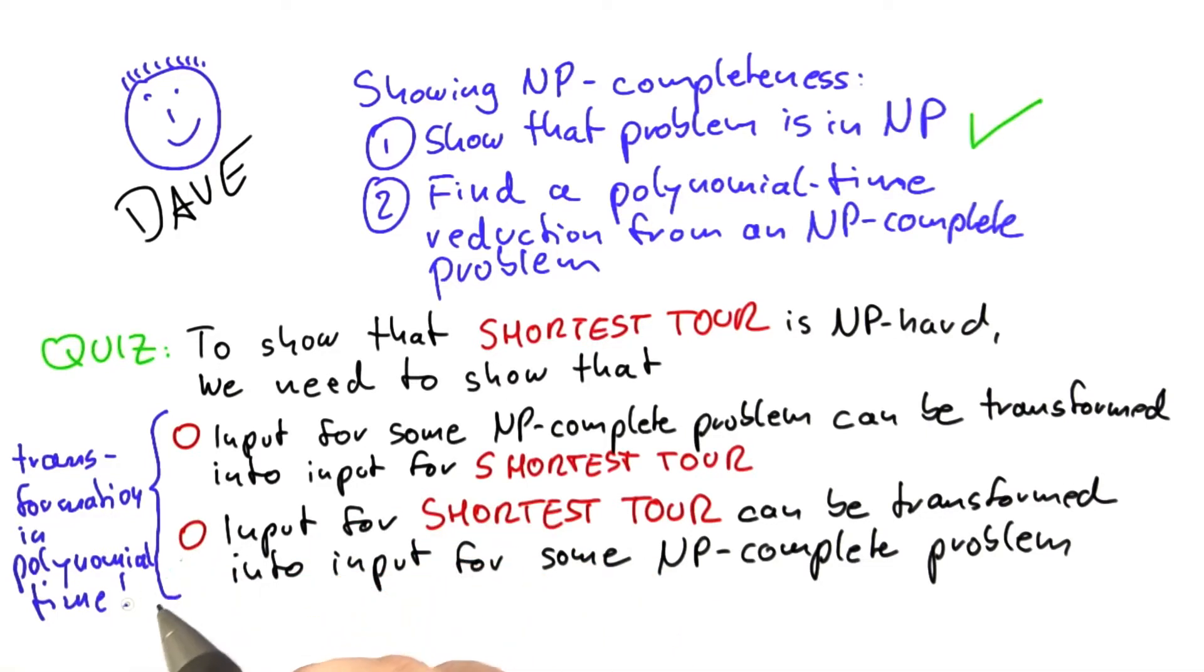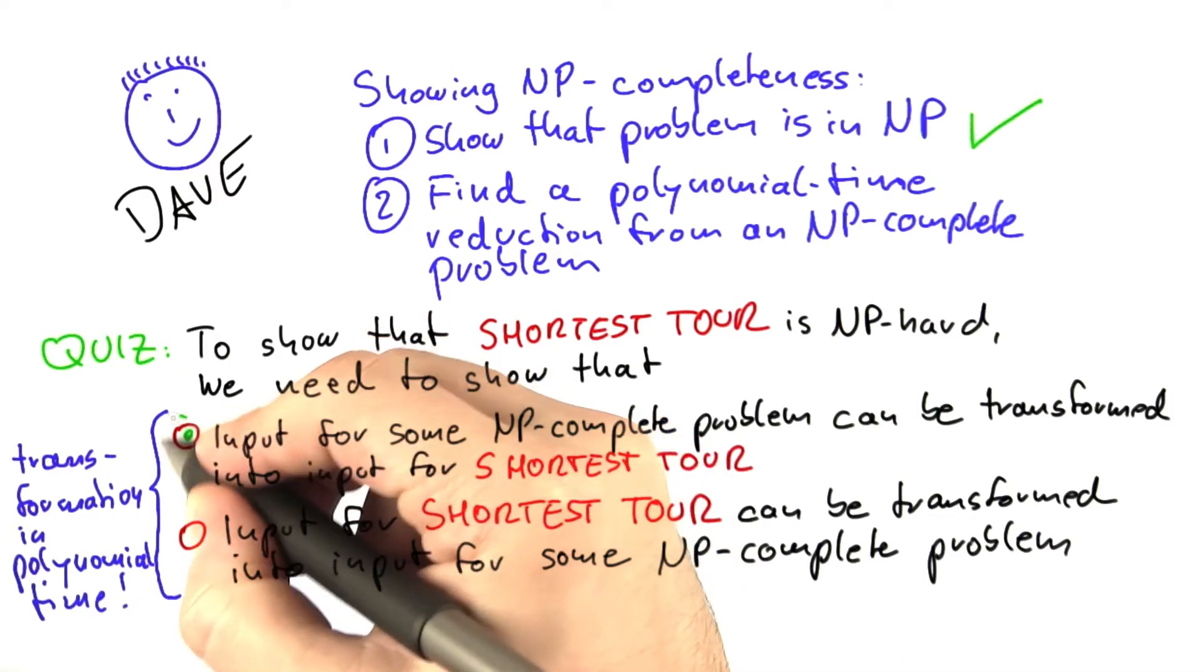And the correct answer, if you remember right from the last unit, is that we need to take some NP-complete problem and show that we can use shortest tour to solve that problem. So this one up here is correct.